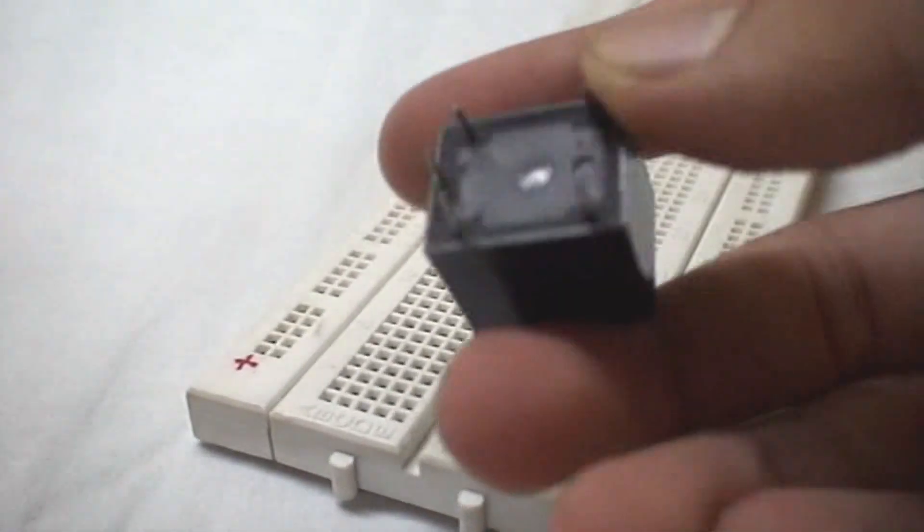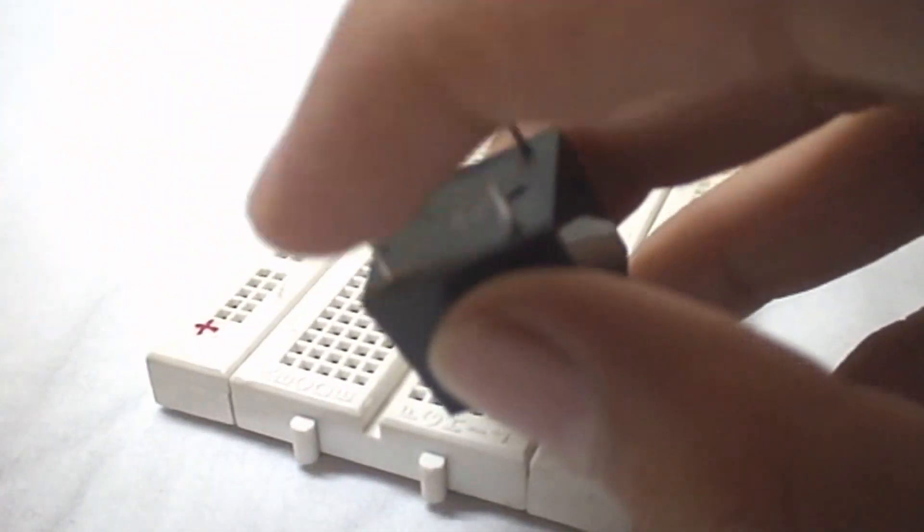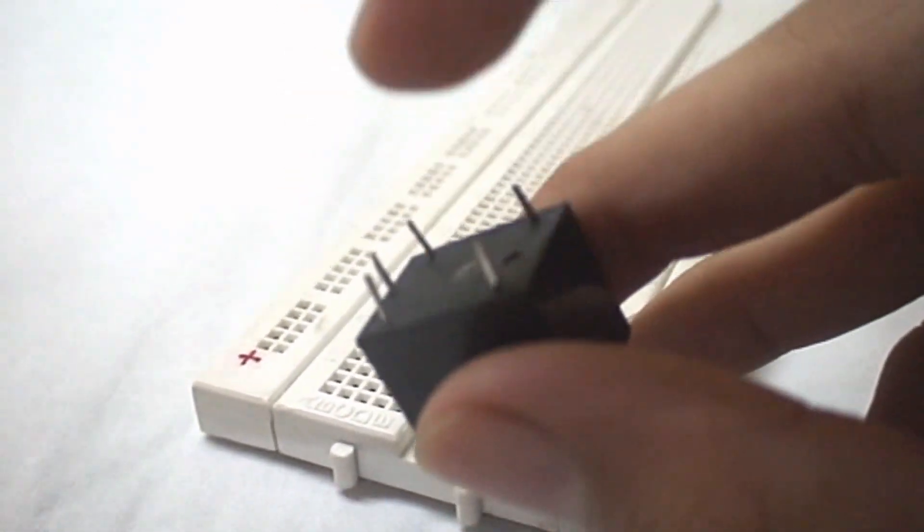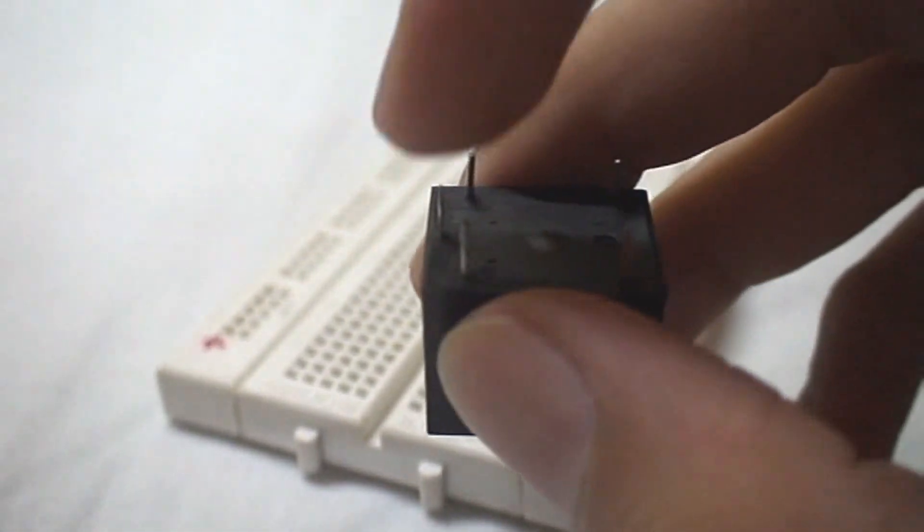We start by inserting the relay on the breadboard. This coil terminal is one, the other coil terminal is two, normally closed terminal is three, normally open terminal is four, and the movable contact is five. We insert it on the breadboard.